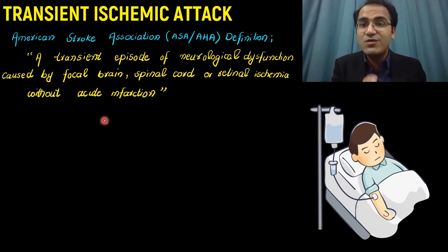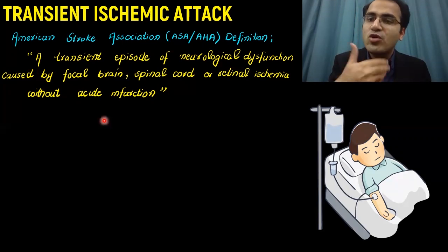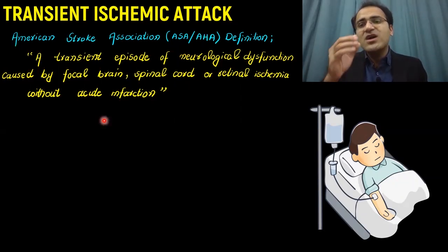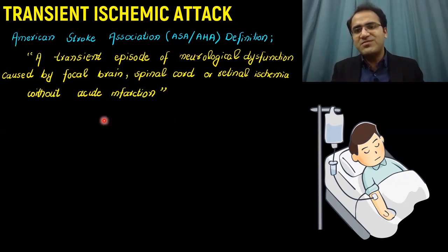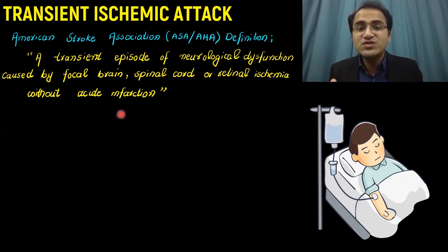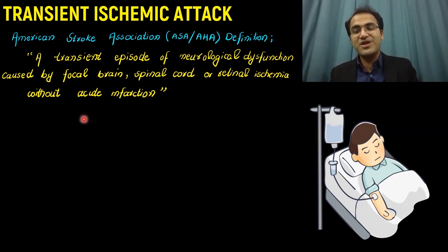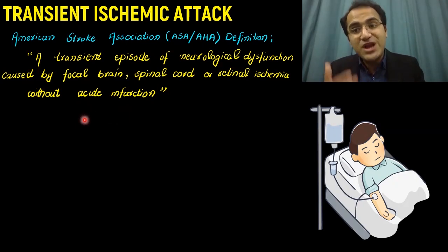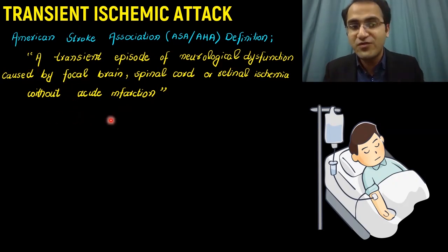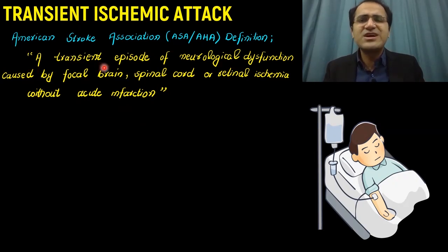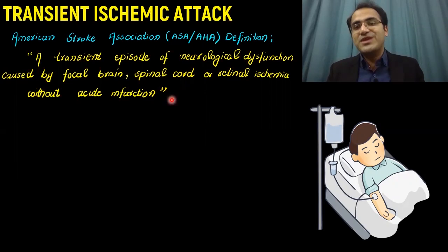Transient — for some time there was ischemia to the brain, therefore the patient had a neurological complaint. That ischemic attack resolved within some time. There was no permanent damage to the brain, no acute infarction, and the patient recovered. So that is called transient ischemic attack. You will not find any acute infarction on imaging, and the patient will have a transient episode of neurological dysfunction without any brain injury.